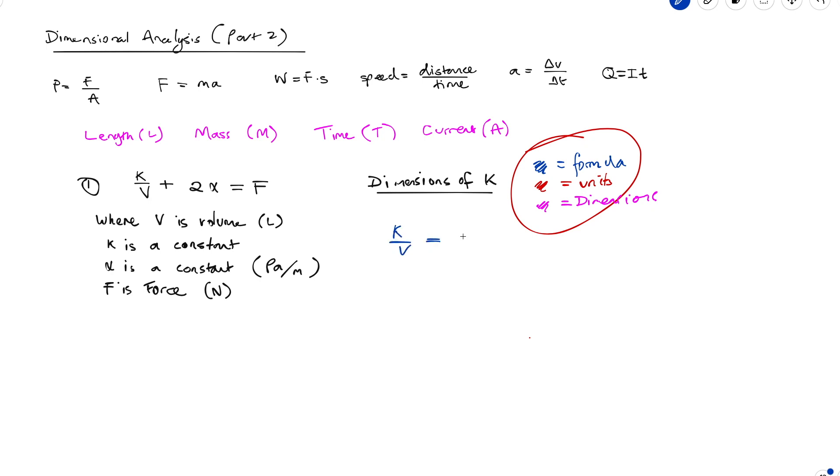So here, when we're adding k over v and 2α, what we can do is we can assume that in terms of their dimensions, they must be equal. So k over v must be equal to α. Now, the other thing is really constants like 2 don't even have dimensions, so we're just going to knock that out immediately, and already we've created a pretty simple formula here.